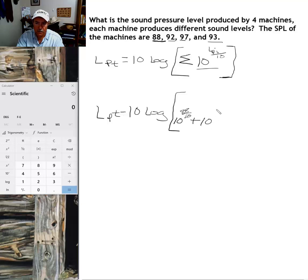Then we have 10 to the 92 to the 10th power, 92 tenths power, that's a mouthful for an Oklahoma boy to spit out. Then we have 10, 97 divided by 10, plus 10 to the 93 divided by 10.